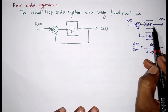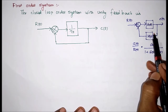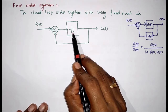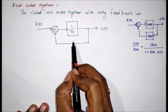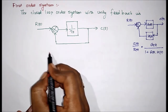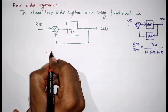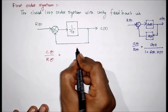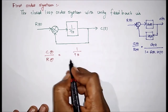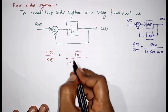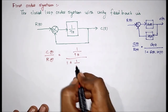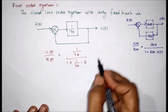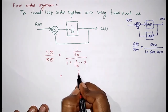We already know how to reduce the feedback. Here this is the input, this is the output, this is the system gain, and this is the feedback gain. So here the feedback gain is 1, therefore C(s) divided by R(s) equals G(s), which equals 1 by Ts, divided by 1 plus G(s). Since feedback gain is unity, that equals 1.